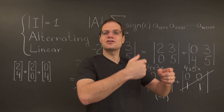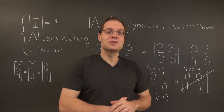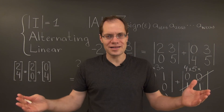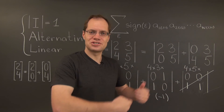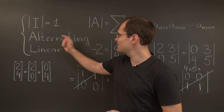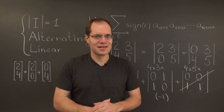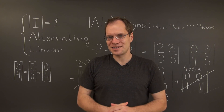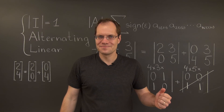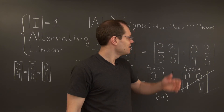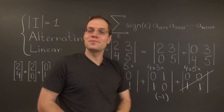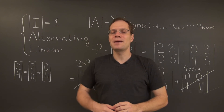Why? Because we'll start swapping the rows until we get to the identity, at which point the determinant will become one. So what was the original determinant? If it was an even number of steps, then by the alternating property the determinant is one. And so now you see how this formula has perfectly constructed itself from nothing but these basic properties.